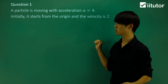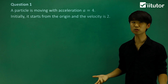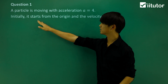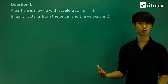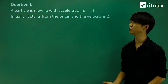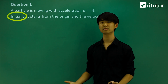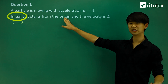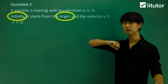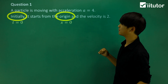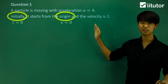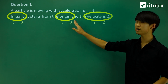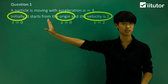Looking at question one: a particle moves with an acceleration of a = 4. Initially, it starts from the origin and the velocity is 2. 'Initially' means when t = 0, and 'starts from the origin' means x = 0. So when t = 0, x = 0 and v = 2 — these are the values we need.